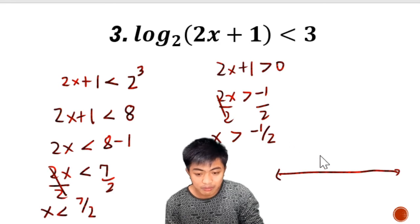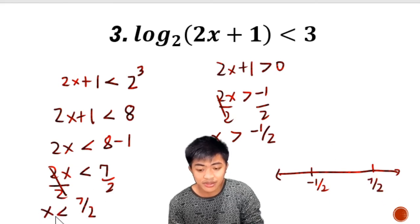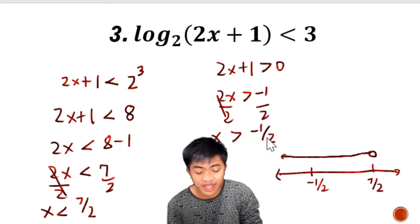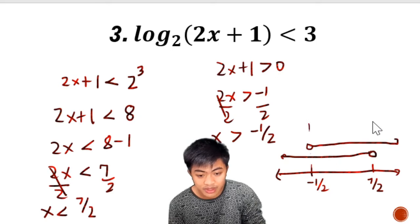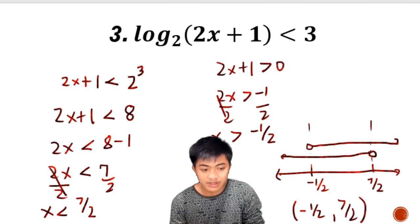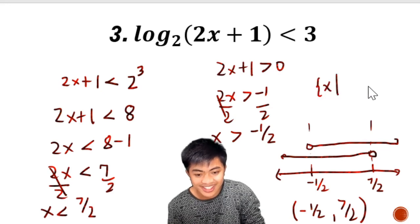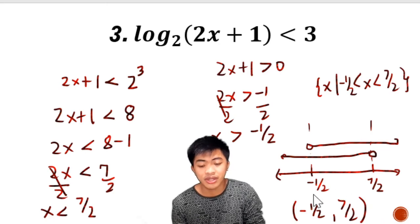We draw a number line with negative one half on the left and positive 7 halves on the right. For x less than 7 halves: open circle, shade to the left. For x greater than negative one half: open circle, shade to the right. Their intersection is from negative one half to 7 over 2. Both are open circles, so we use parentheses: (−1/2, 7/2). In set-builder notation: the set of all x such that x is greater than negative one half and less than 7 over 2.